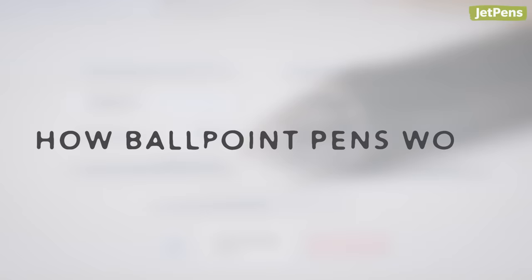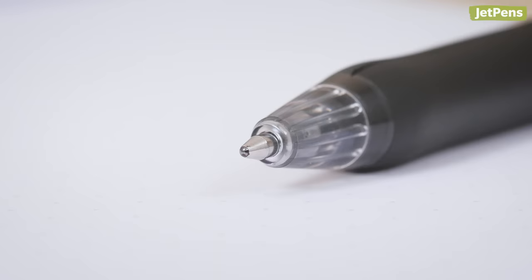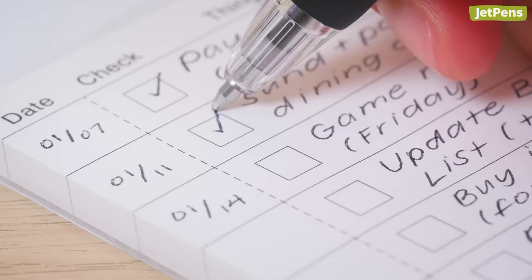How Ballpoint Pens Work: The ballpoint pen gets its name from the small rotating ball at its tip. As downward pressure is applied, ink is dispensed from the ball tip.